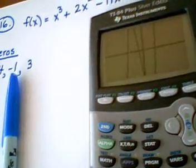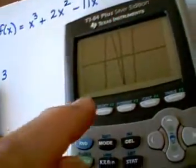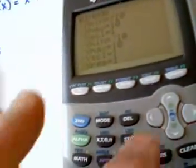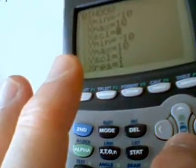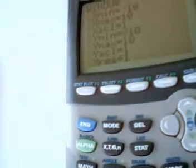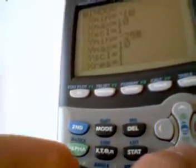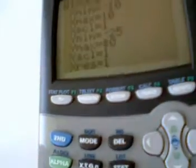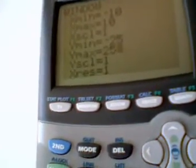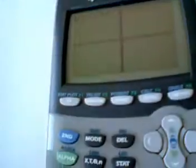You can hit zoom fit, which is zoom zero, but it really doesn't do too much for the graph. I just tried it earlier. I'm going to go to window, and I am going to go down to my y settings, and I'm going to change y min to maybe a negative 25, and y max to a positive 25. I'm just guessing, and I'm going to hit graph.